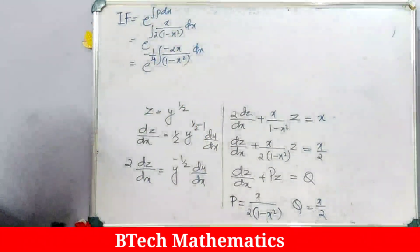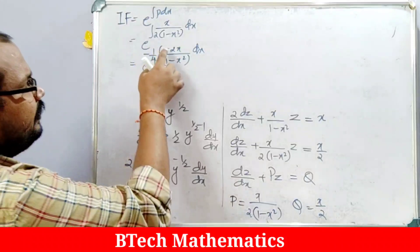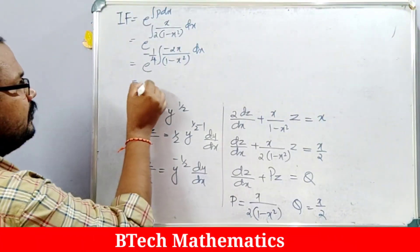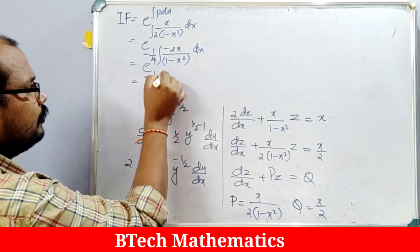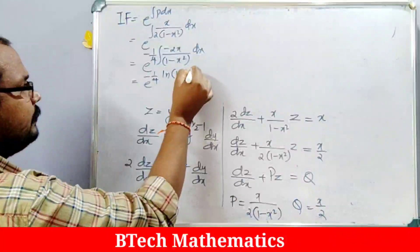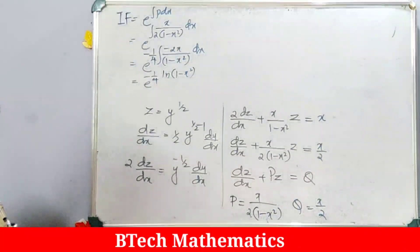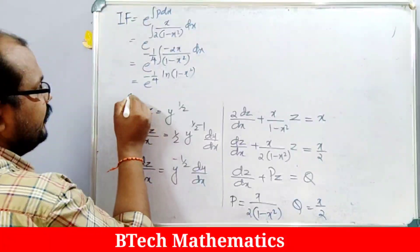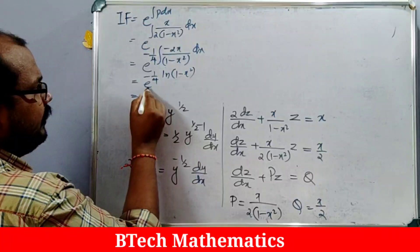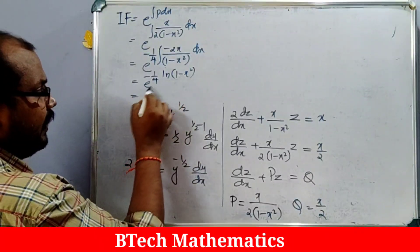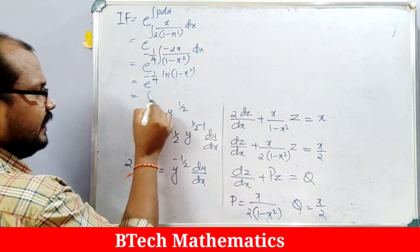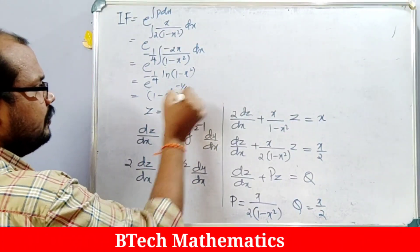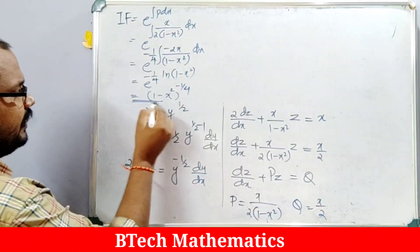This is of the form ∫f'(x)/f(x) dx, so it equals e^((-1/4)·log(1-x²)). Taking -1/4 as the power of (1-x²), and since e and log cancel, the integrating factor is (1-x²)^(-1/4).